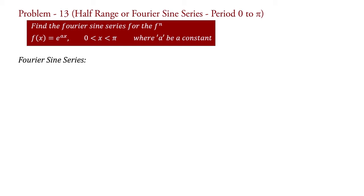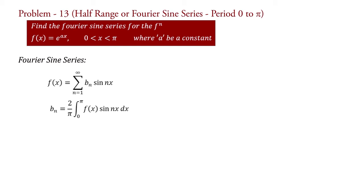The Fourier sine series is f(x) = summation n=1 to infinity of bn sin(nx), where bn = (2/π) integral from 0 to π of f(x) sin(nx) dx. We will calculate bn and then put its value in this equation.